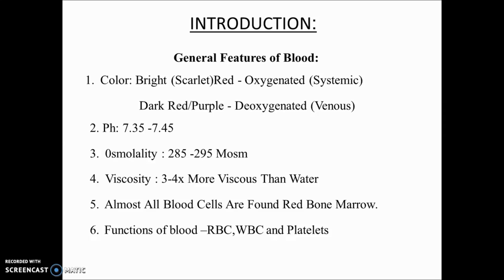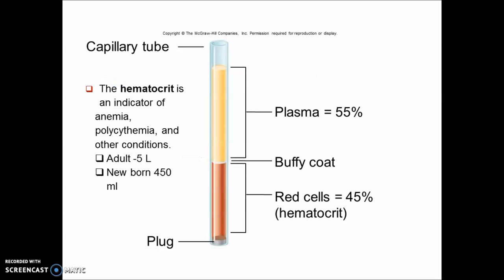What are the functions of blood? Blood consists of three main things: RBC, WBC, and platelets. RBC helps in transport of oxygen from the lungs to the tissues. WBC protects your body against infection. Platelets interact with blood vessels and clotting factors to maintain the integrity of blood vessels and help in bleeding and clotting mechanisms.